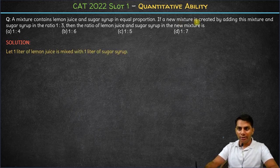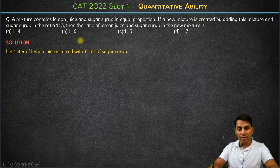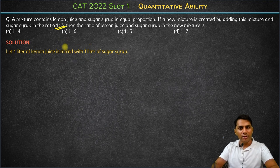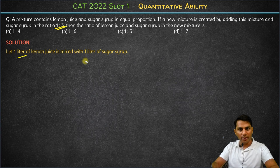Now a new mixture is created by adding this mixture and sugar syrup in the ratio of 1 is to 3. So this mixture, which is total how many liters - 1 plus 1 is 2 liters. So 2 liters of this is going to be mixed with sugar syrup in the ratio of 1 is to 3.